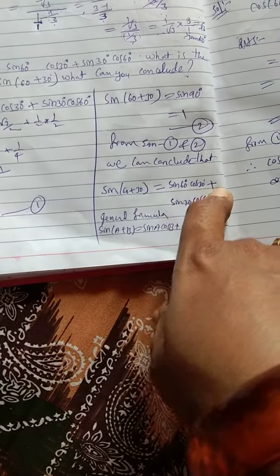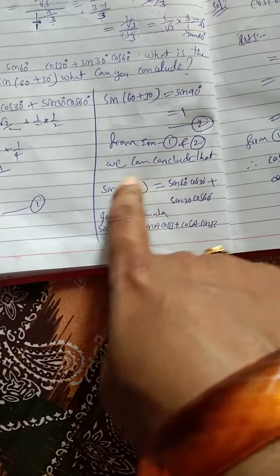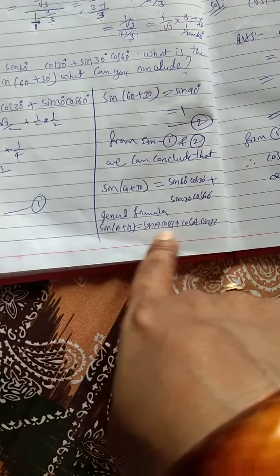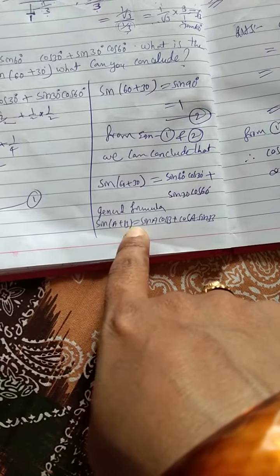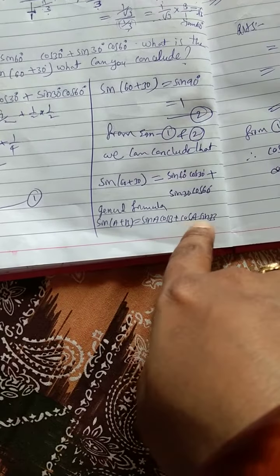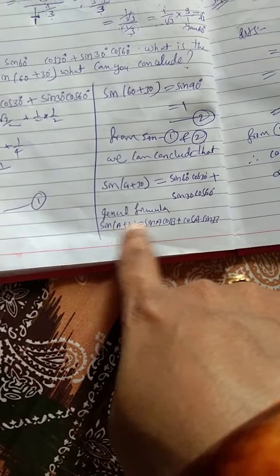This is the general formula which will show here: sin a plus b is equal to sin a cos b plus cos a sin b. This is a general formula like this only.